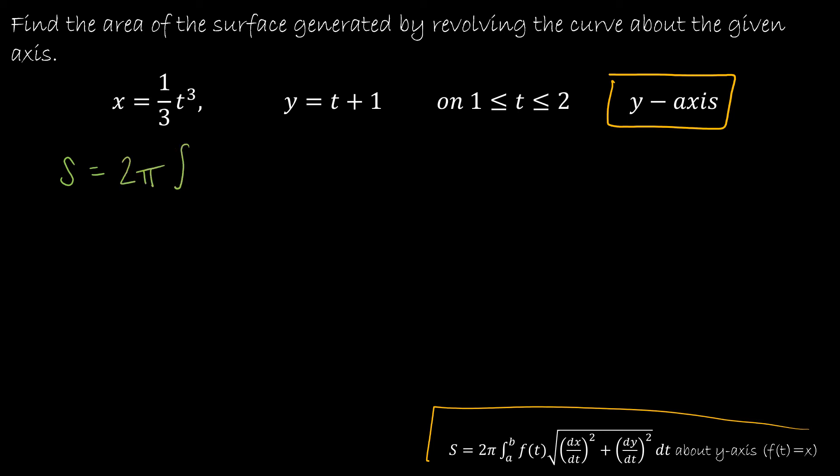So this says to find the area of the surface, I'm going to take 2π. And I'm going to integrate from 1 to 2 because those are the limits of integration given to me. So I'm going to cross that off because I've used it. And I'm going to cross off y-axis because that's how I have chosen the correct formula. f(t) is going to be whatever your x equation is.